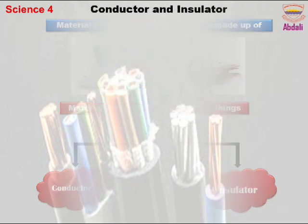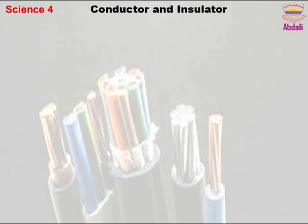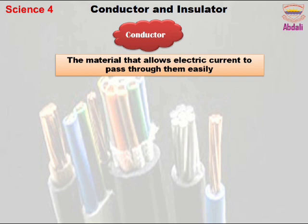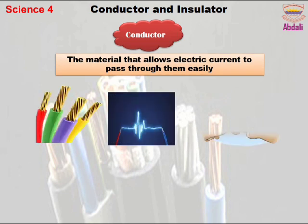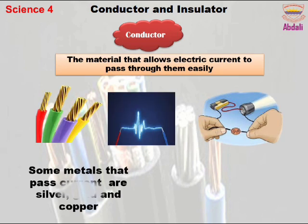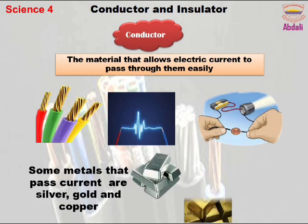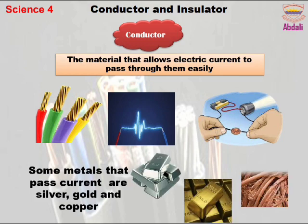Let's discuss about conductors. Conductors are the materials that allow electric current to pass through them easily. Some metals that can easily pass current are silver, gold, and copper.